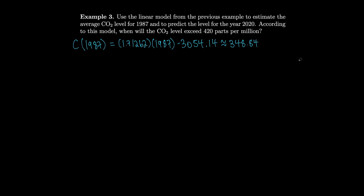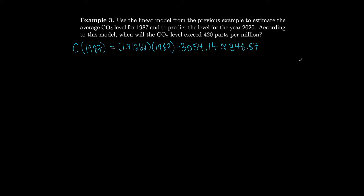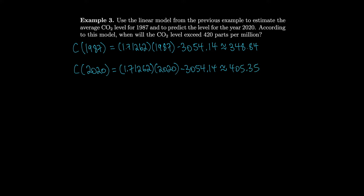Now for the prediction for 2020 — that will be extrapolation because we're looking at a year outside of our data range. Our years only go up to 2012. So for C(2020): 1.71262 times 2020 minus 3054.14 gives approximately 405.35. This is an example of extrapolation because we're looking at a year in the future, outside our range.